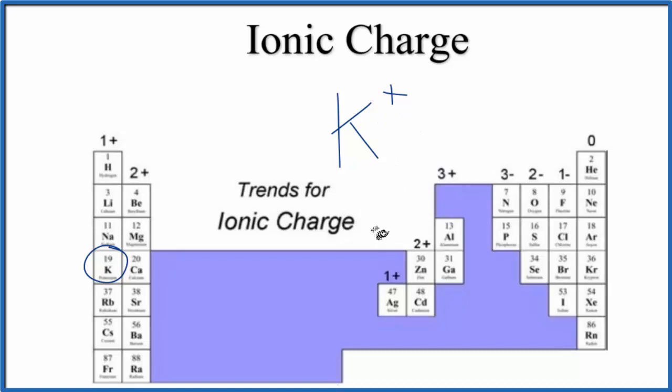We could look at the electron configuration, and we could use that to figure out why it's a one plus. So we'll look just at K, potassium, not the potassium ion K plus. Potassium has 19 protons, so it has 19 electrons. So that's what we'll use to write the electron configuration.